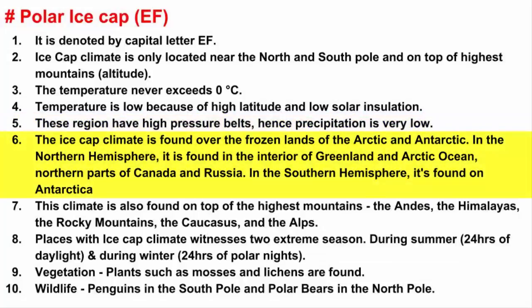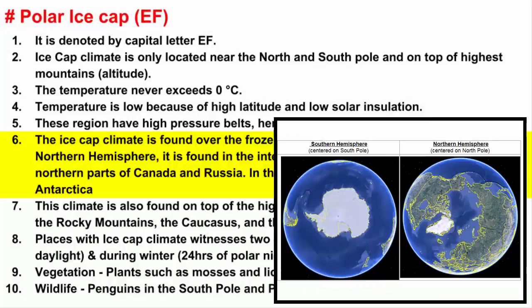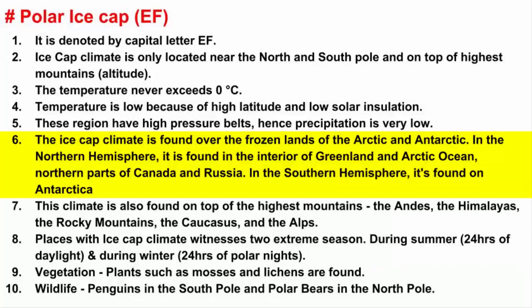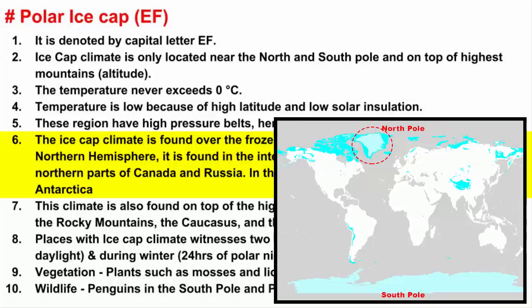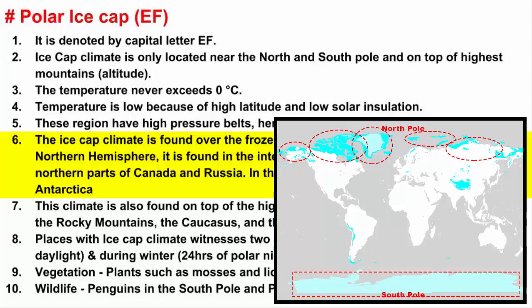The ice cap climate is found over the frozen lands of the Arctic and Antarctic. In the northern hemisphere, the ice cap climate is found over the interior of Greenland and the permanently frozen portion of the Arctic Ocean and northern parts of Canada and Russia. In the southern hemisphere, the vast continent of Antarctica is the largest location of ice cap climate.